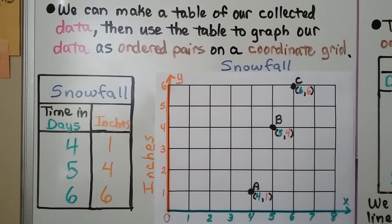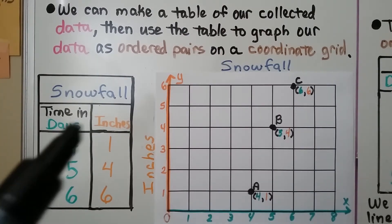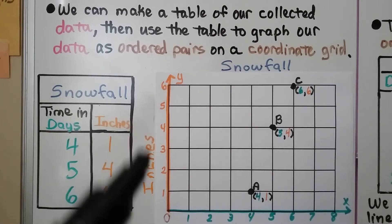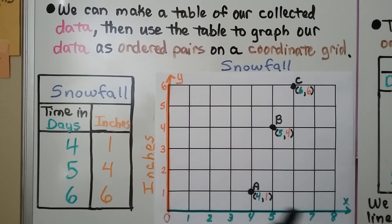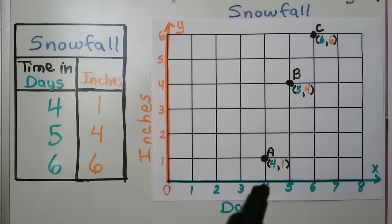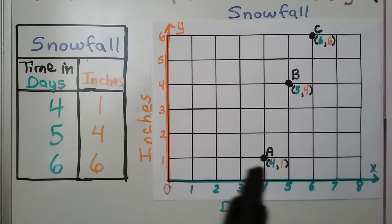We can make a table of our collected data, then use the table to graph our data as ordered pairs on a coordinate grid. Here our table shows snowfall — the time in days and inches. The y-axis shows the inches and the x-axis is for the time in days. At four days, there was one inch, so we have our point at four for the days and one for the inches.